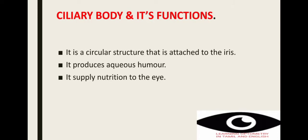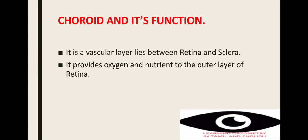Next is the ciliary body. Ciliary body is a circular structure attached to the iris. It produces aqueous humor and supplies nutrition to the eye. The next part is the choroid. Choroid is also a vascular layer that lies between the retina and sclera, and provides oxygen and nutrition to the outer part of the retina.